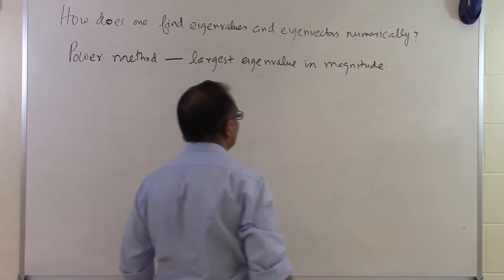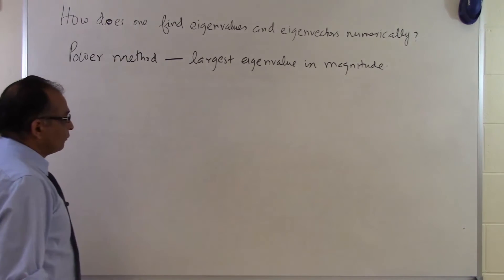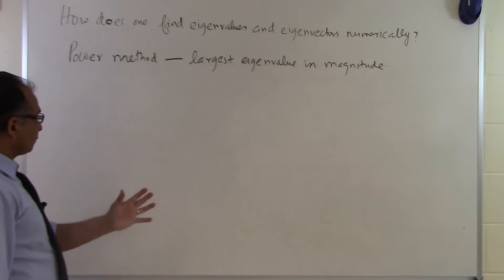If you know the eigenvalues of a square matrix and take the absolute value of all of them, it will find the one for which that absolute value is the largest. You'll find only that eigenvalue—the largest eigenvalue in magnitude.